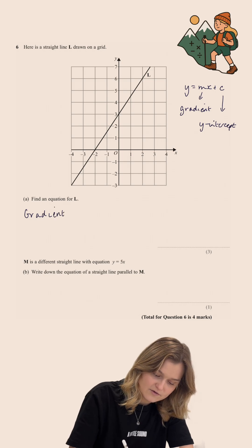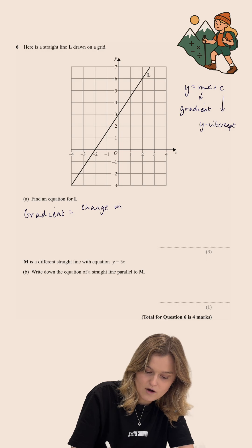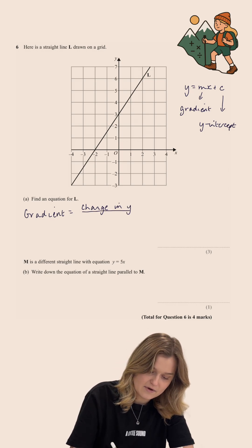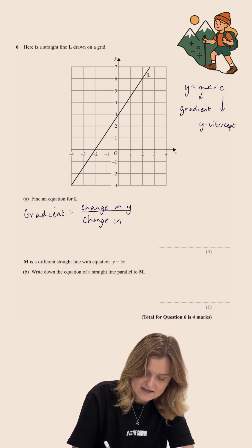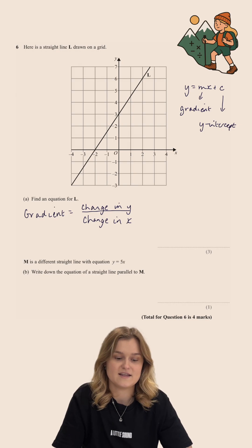To find the gradient, we use the formula change in Y - this just means how much has the Y-coordinate changed by from one coordinate to the next - divided by change in X, and this just means how much has the X-coordinate changed by from one coordinate on the line to the next.